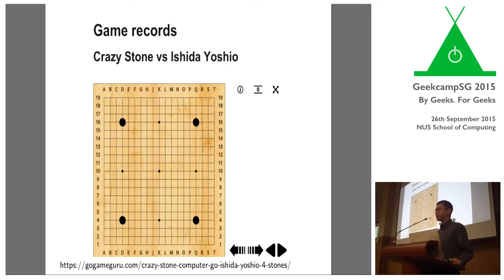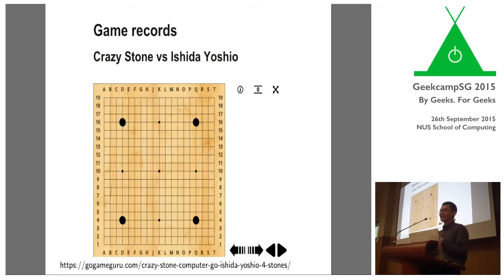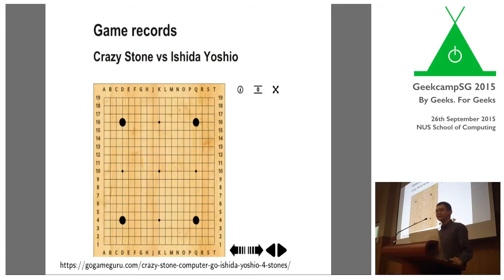In this year's competition they tried a three-stone handicap but the computer lost. Four stones might seem like a small gap, but the last 10-20 percent is always the most difficult to push through. There have been advances in algorithms and techniques that have made this progress possible in the last four or five years.